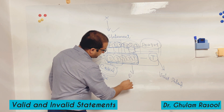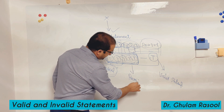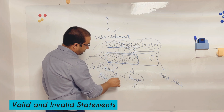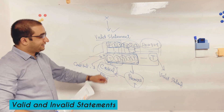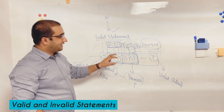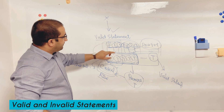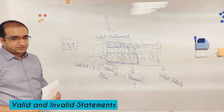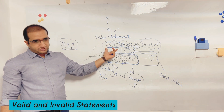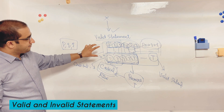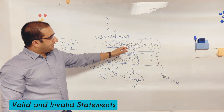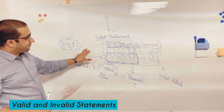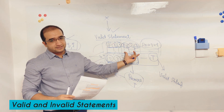If all the premises are true then such a row is called a critical row. From here onward we are not talking about the constituents anymore. We have jumped into the compound statements, so our concern is about the compound statements.